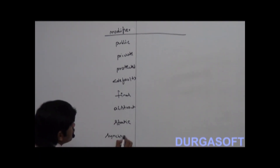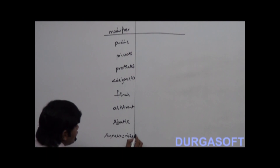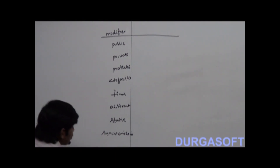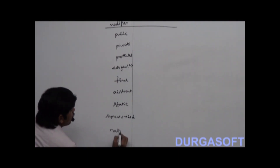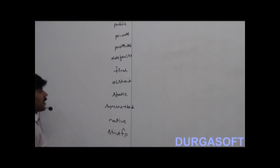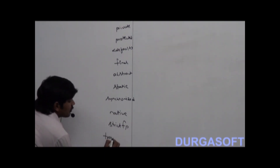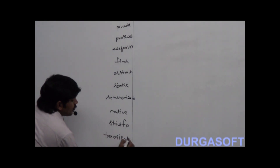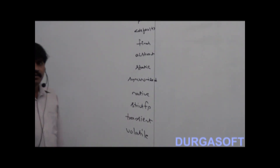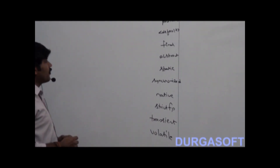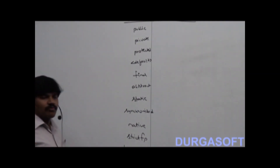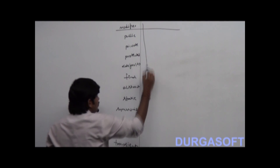Synchronized. And then native. Strictfp. And then transient. Volatile. These are the 12 modifiers available in Java.